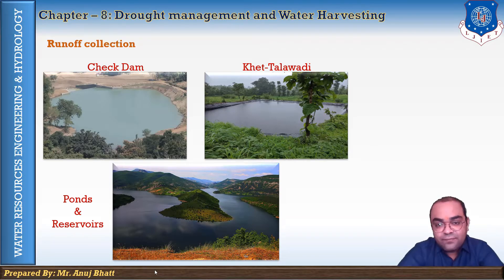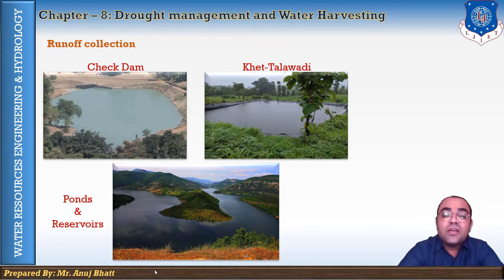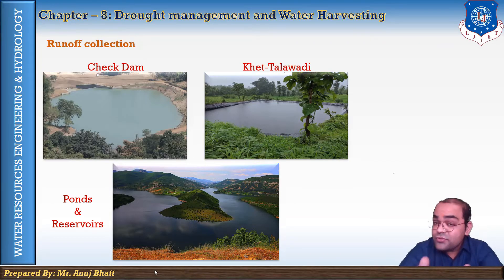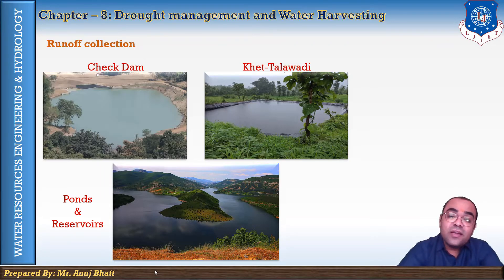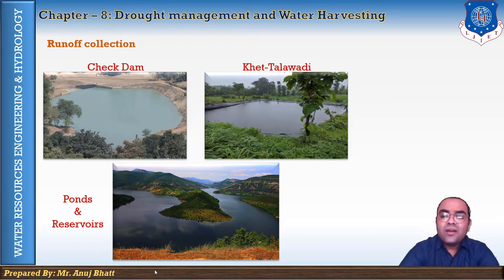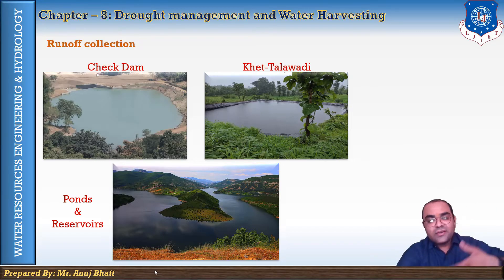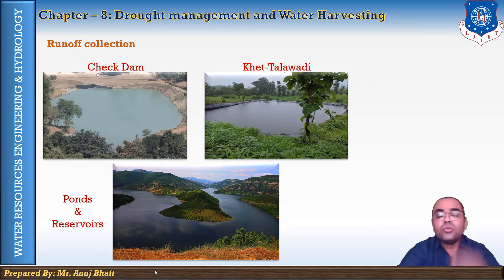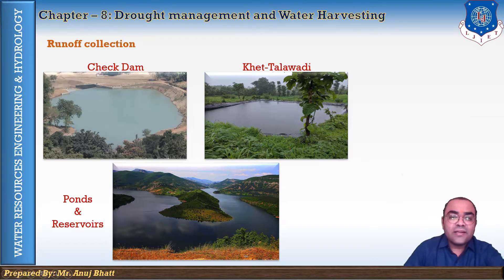The third major method is groundwater recharge, which was also discussed in an earlier chapter. Groundwater can also be recharged using rooftop rainwater harvesting by not providing drawing water — if water is not discharged from the ground, it will automatically restore the groundwater level.